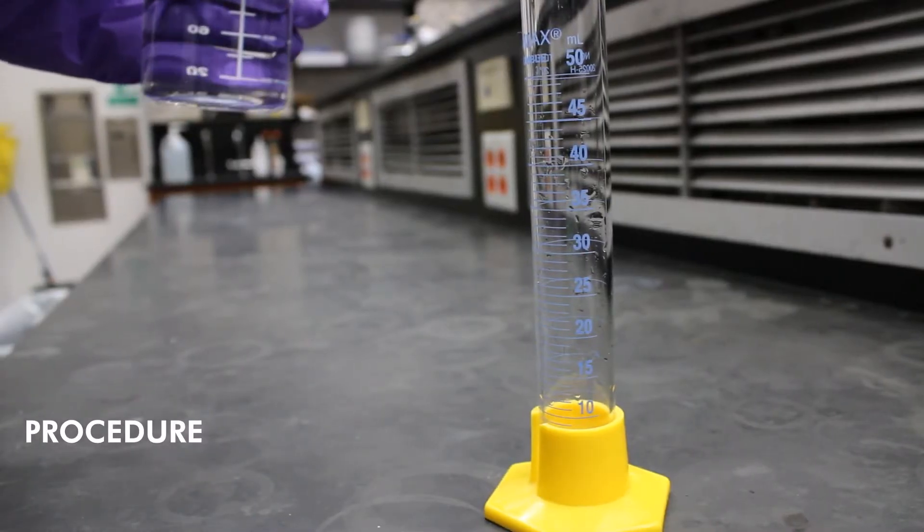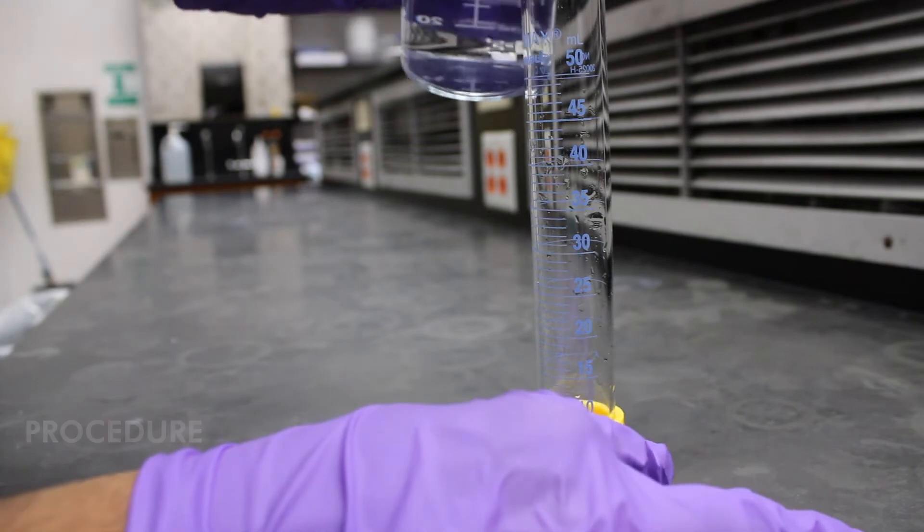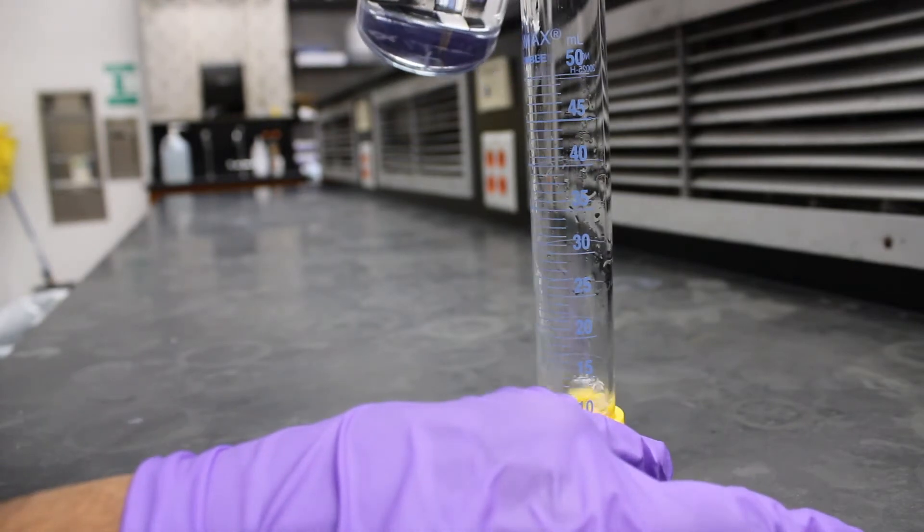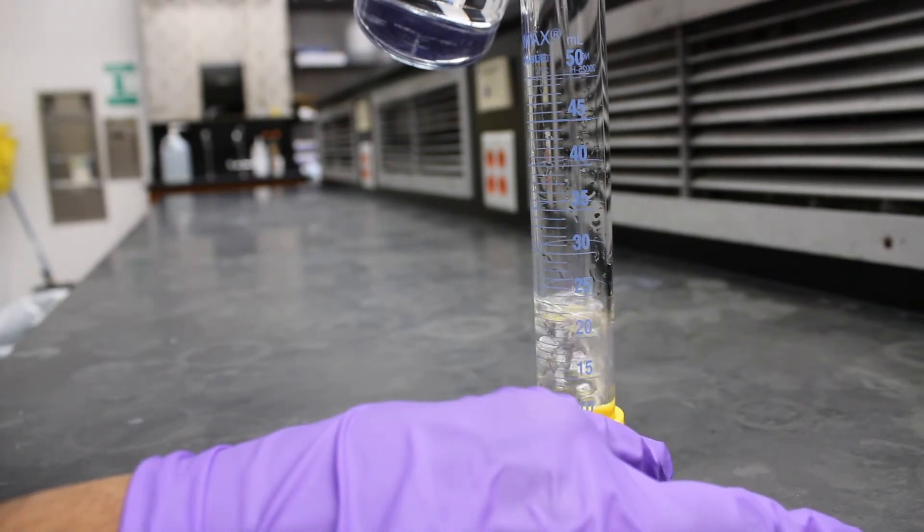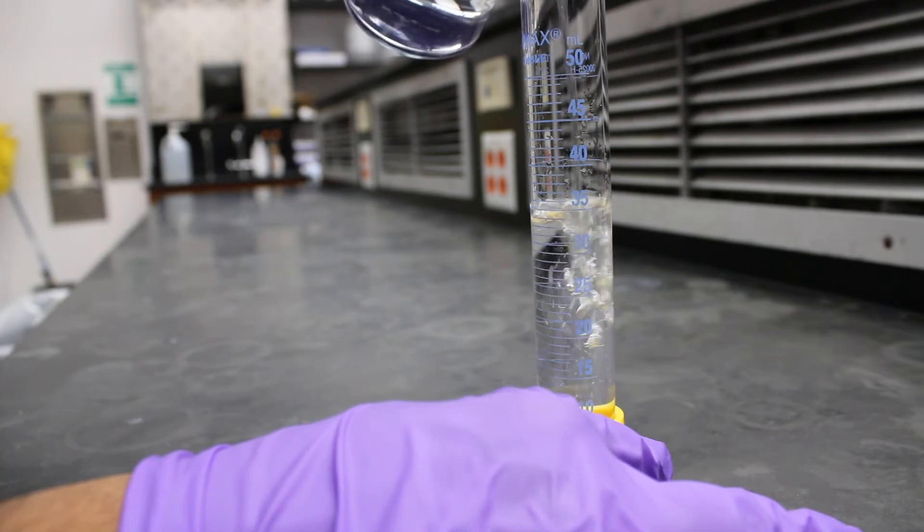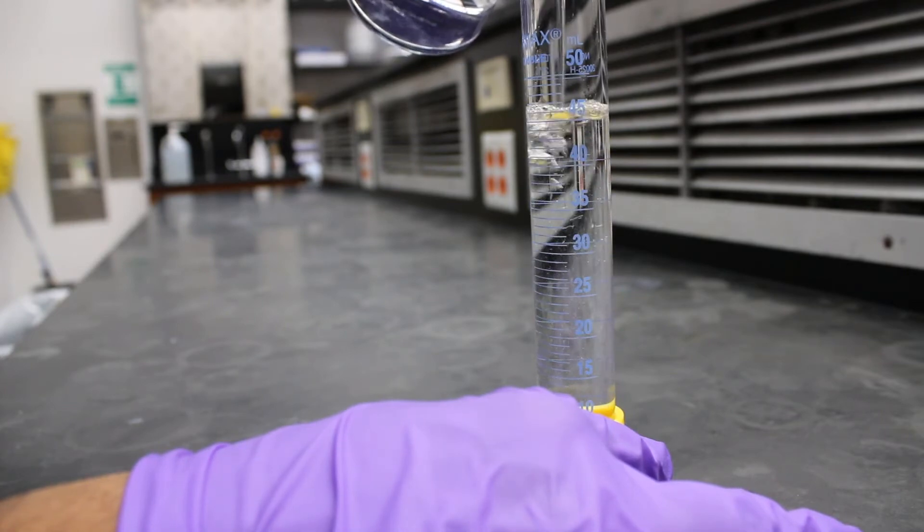Take citric acid and sodium bicarbonate from your TA. Measure 50 ml of DI water with the graduated cylinder and then pour it into your cleaned 150 ml beaker. When measuring the water, ensure that the lower meniscus of the water touches the 50 ml line.